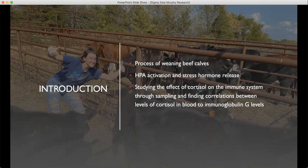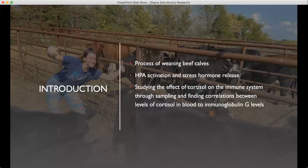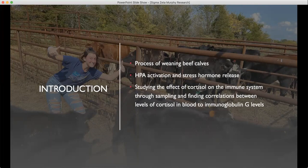The impact of stress on cattle results in activation and enhancement of the hypothalamic pituitary adrenal axis. Activation of the HPA results in multiple step processes accumulating with the release of cortisol, a stress-related hormone. Cortisol release manifests as alterations to both physiological and psychological responses. For this research, the focus will be the physiological responses, more specifically, the effect of cortisol on the immune system through sampling and finding correlations between levels of cortisol in blood to IgG levels.